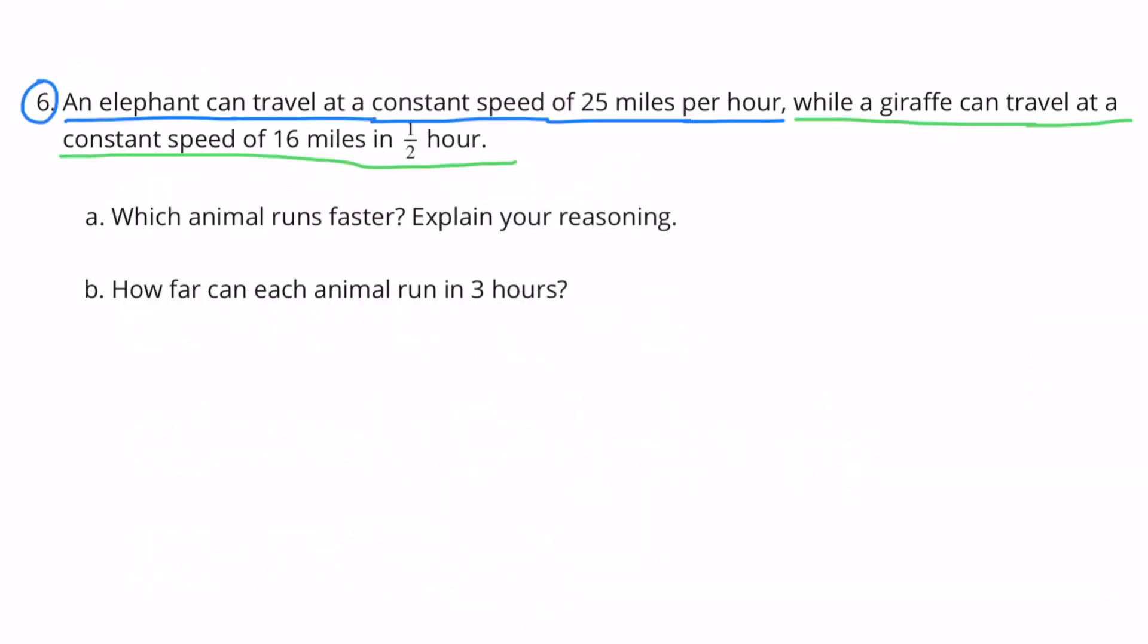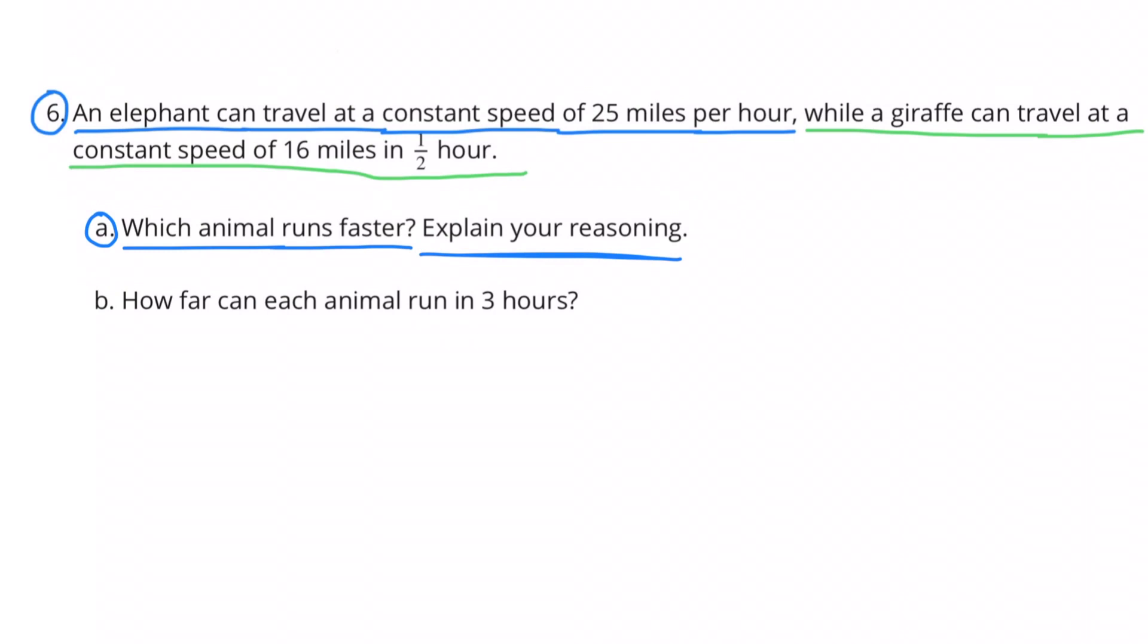Number 6. An elephant can travel at a constant speed of twenty-five miles per hour, while a giraffe can travel at a constant speed of sixteen miles in one-half hour. 6a. Which animal runs faster? Explain your reasoning.